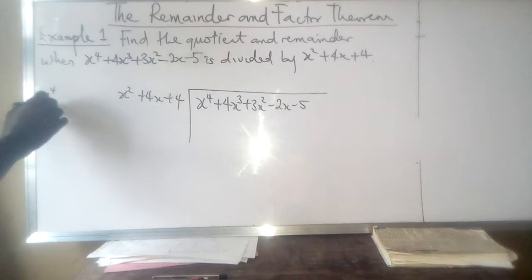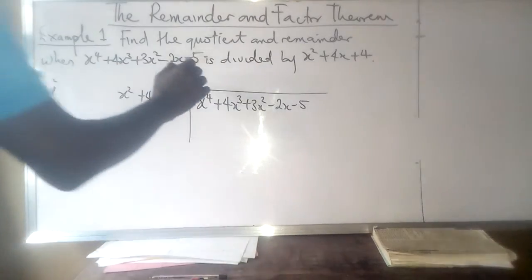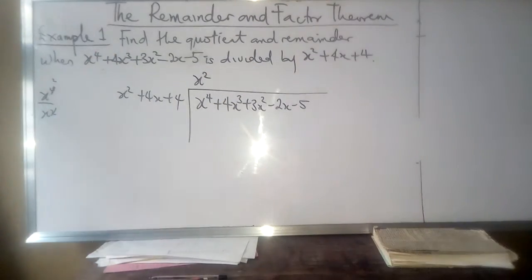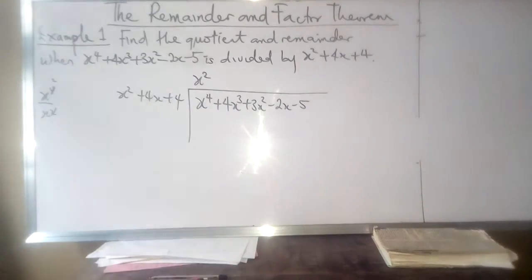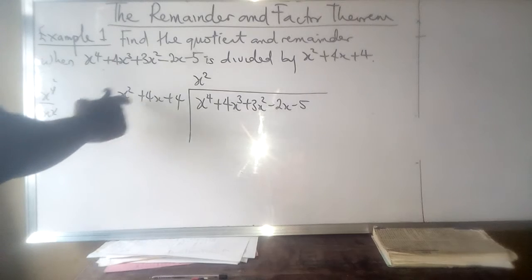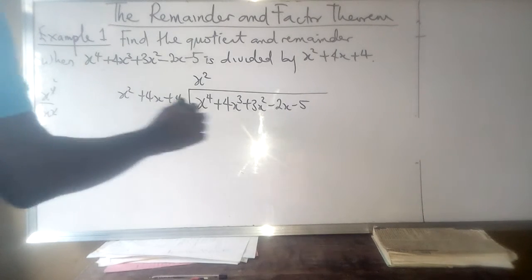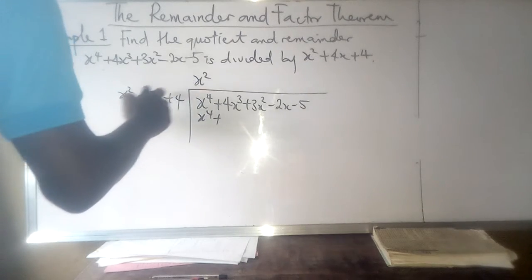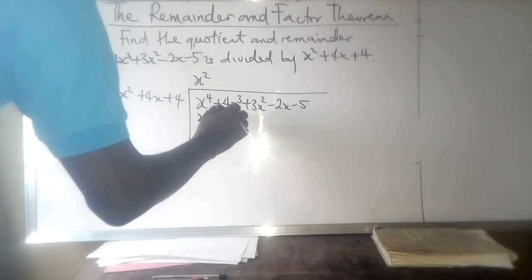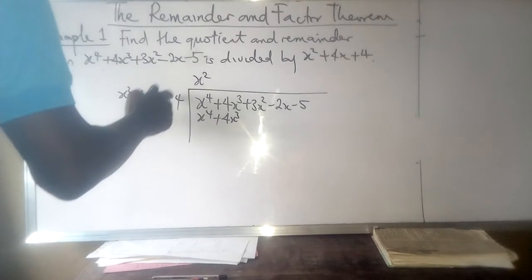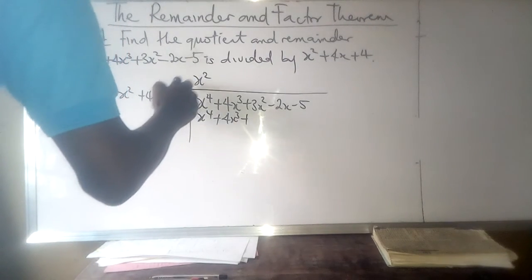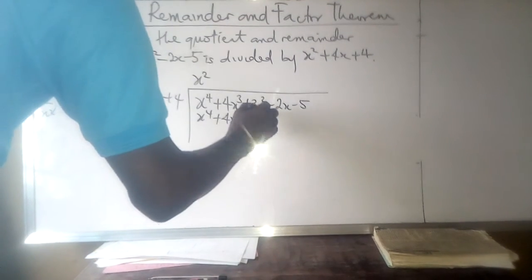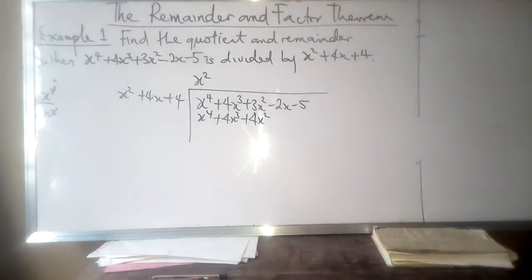So x⁴ divided by x² gives us x². Now we multiply x² + 4x + 4 by x². Multiplying these together: x² times x² equals x⁴, plus times plus gives 4x³, and x² times 4 gives 4x².